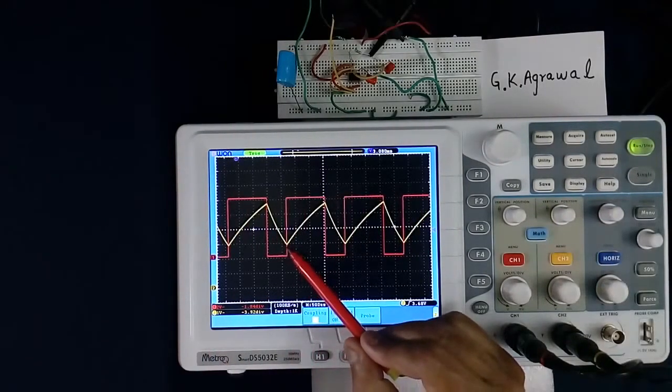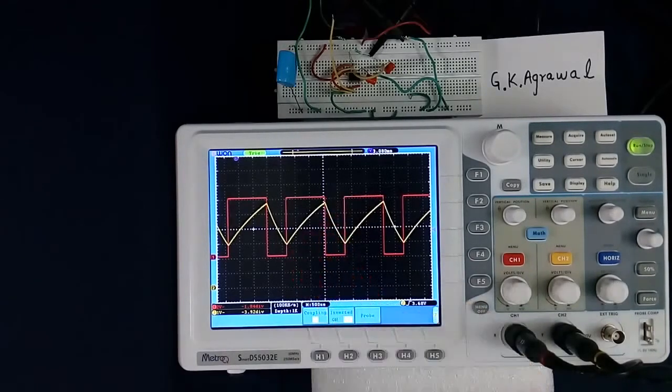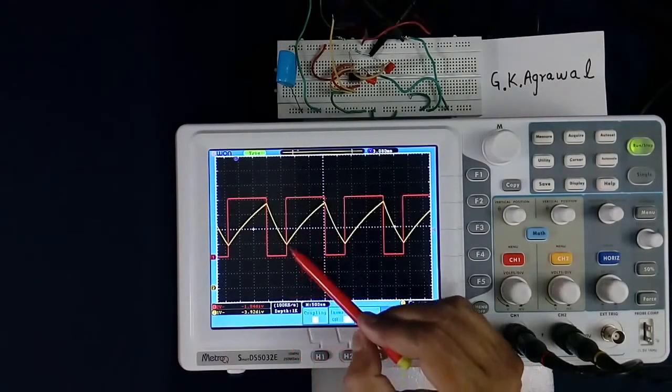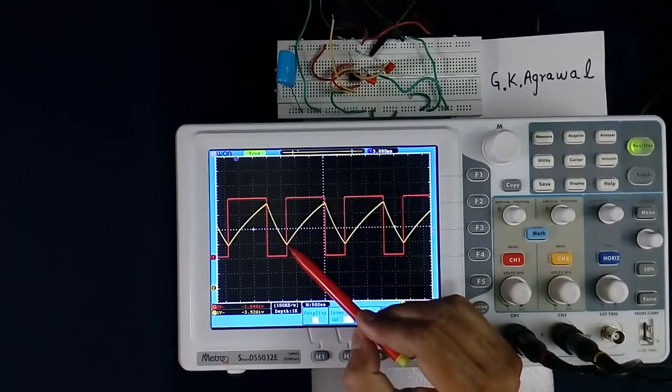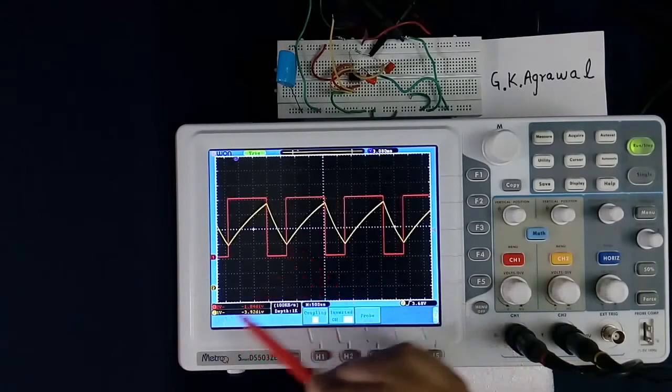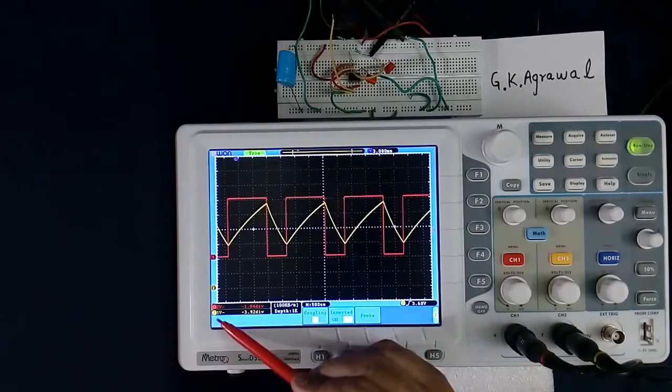So we can measure the voltage of this point and this point. So we will measure the voltage at this point. Scale is 1 volt per division. In my case, it is written here.